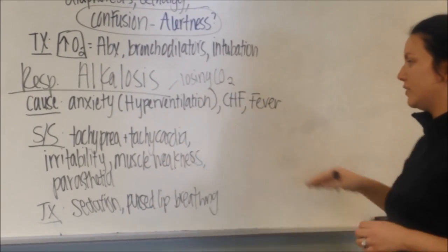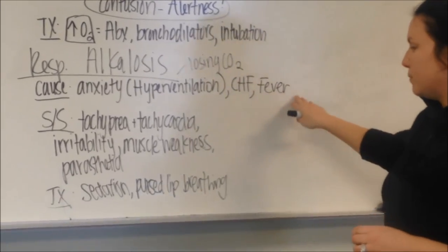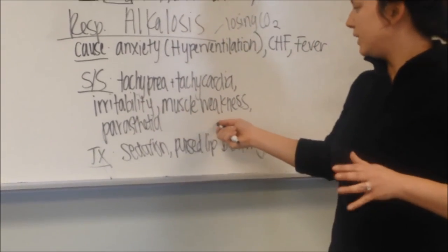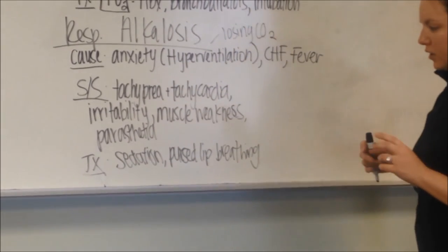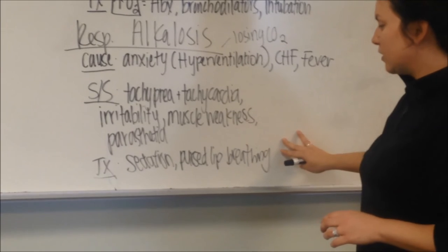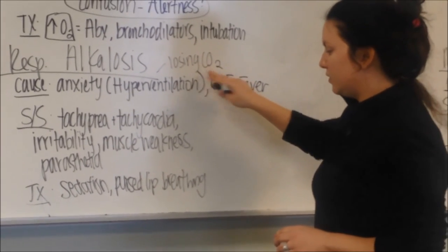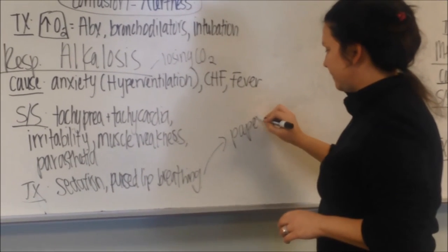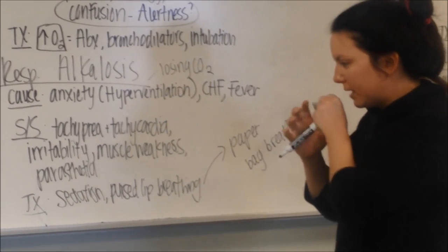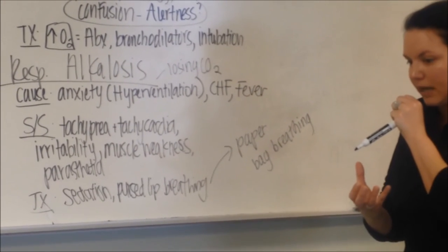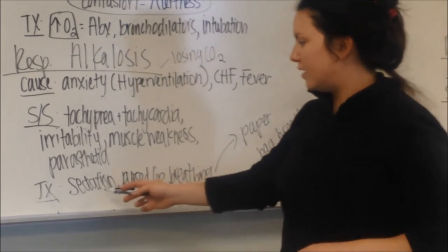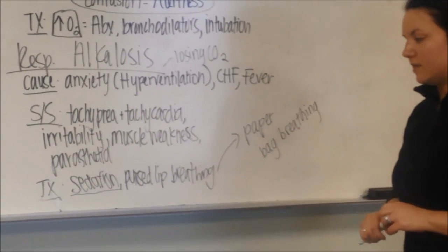Another cause could be congestive heart failure or even a fever because people with fevers start to get tachypneic, tachycardic, irritable. They may have muscle weakness and then paresthesia, numbing or tingling of the fingers. Treatment, nursing treatment for respiratory alkalosis may include pursed lip breathing because you want to retain the CO2, and paper bag breathing, where you're having someone breathe through a paper bag because as they're breathing out, the CO2 is sitting in the bottom of the paper bag, and they are re-breathing CO2 to get them out of alkalosis. And then it may be sedation, so they may order sedatives, and we would have to administer that.